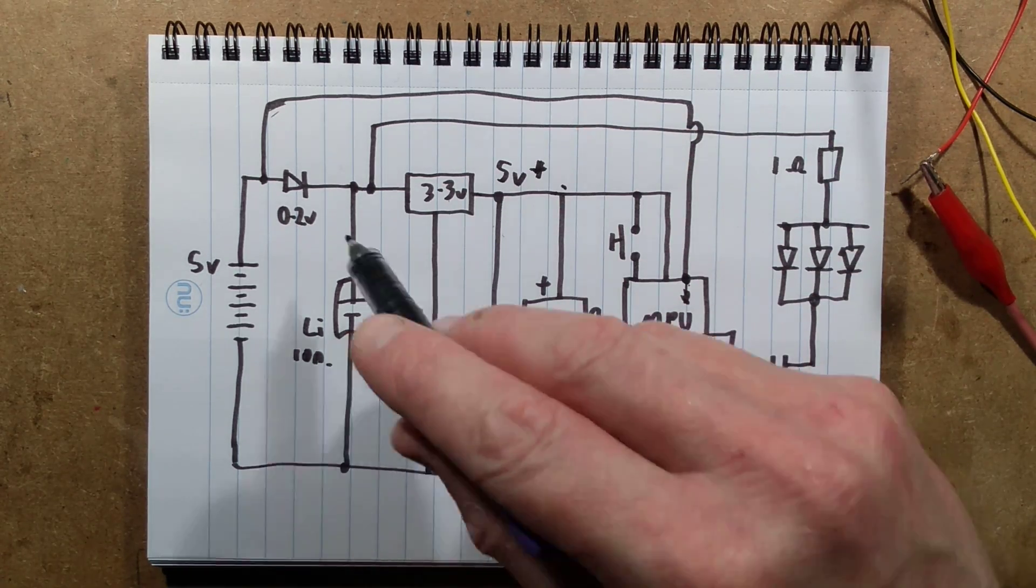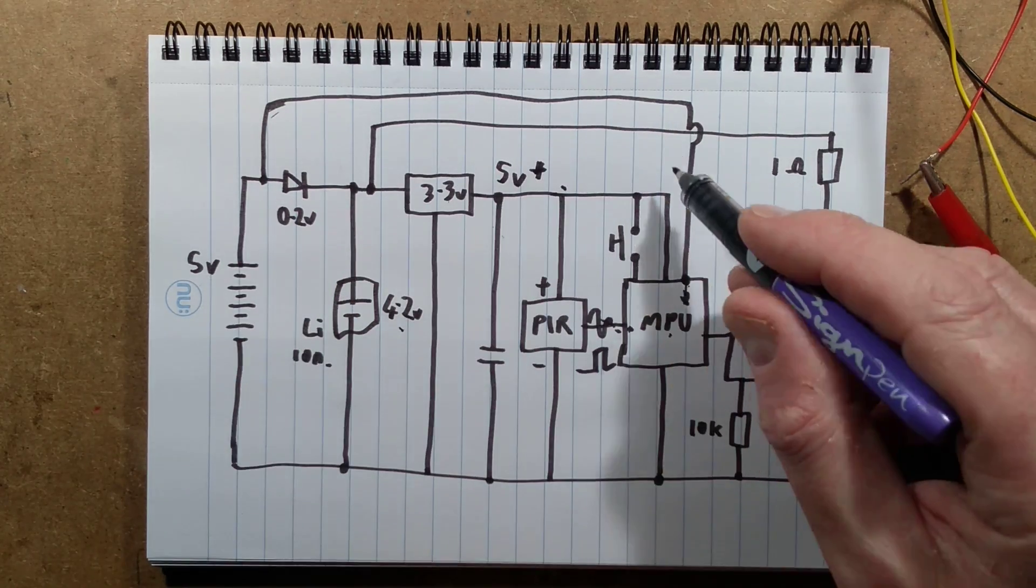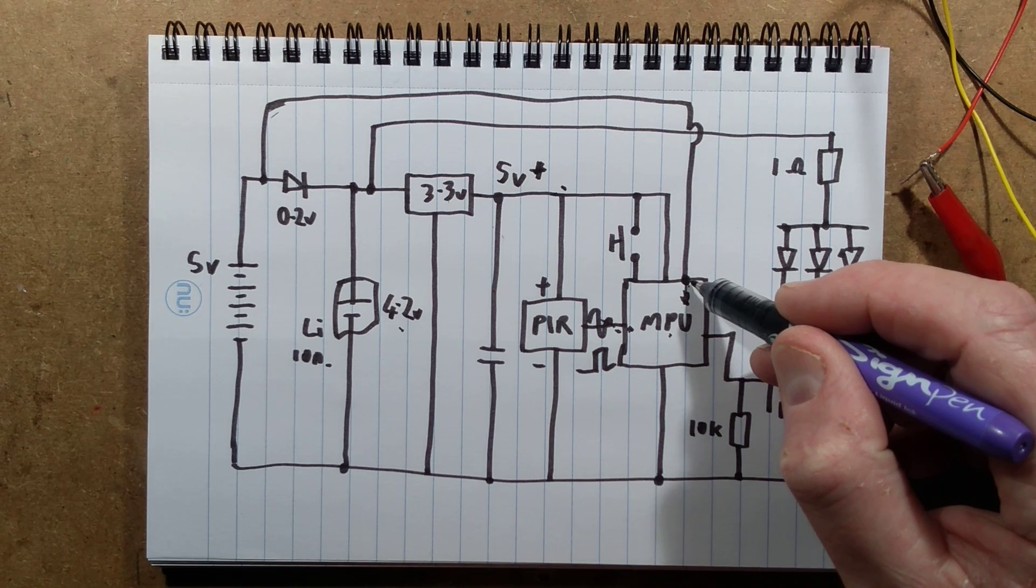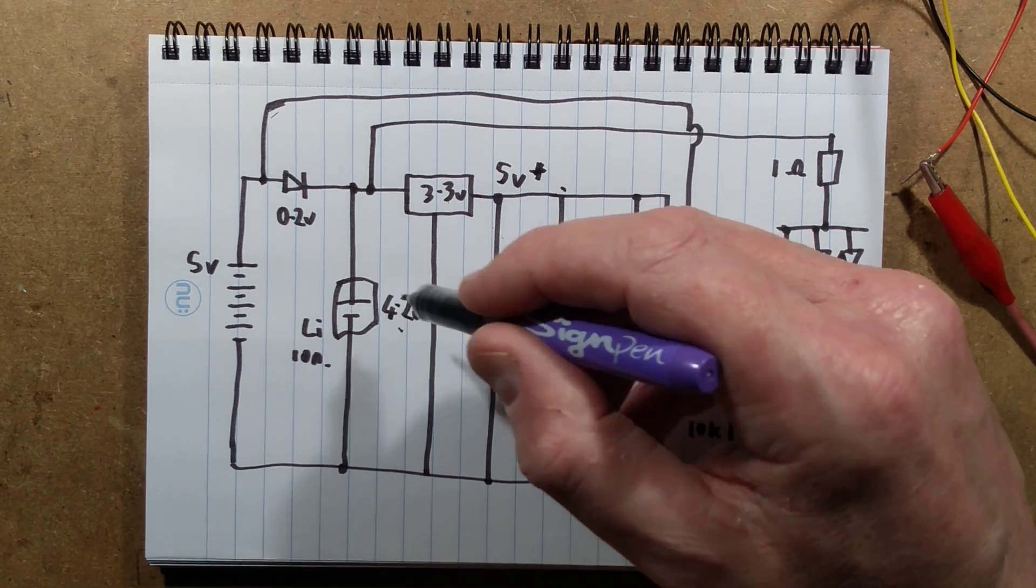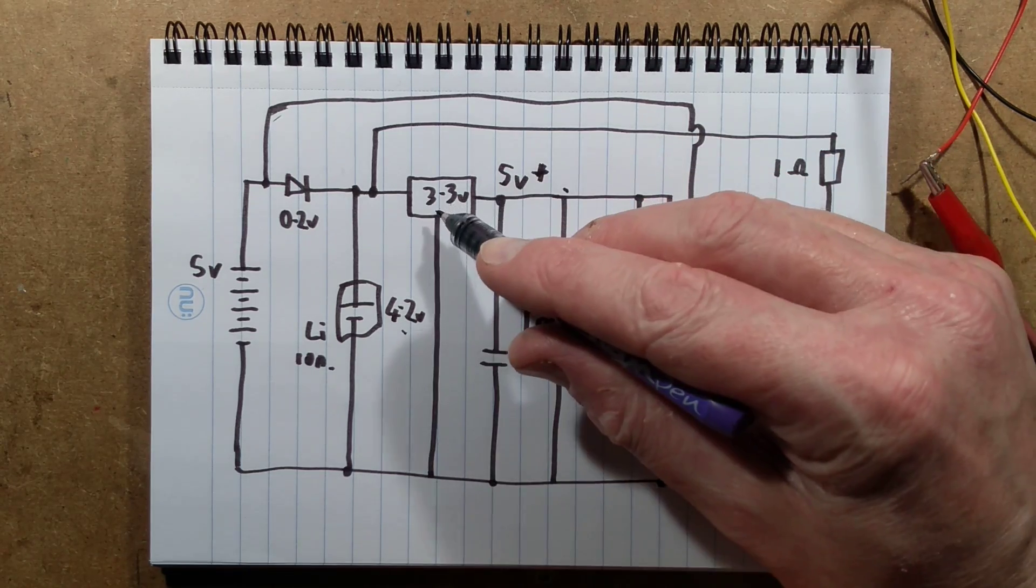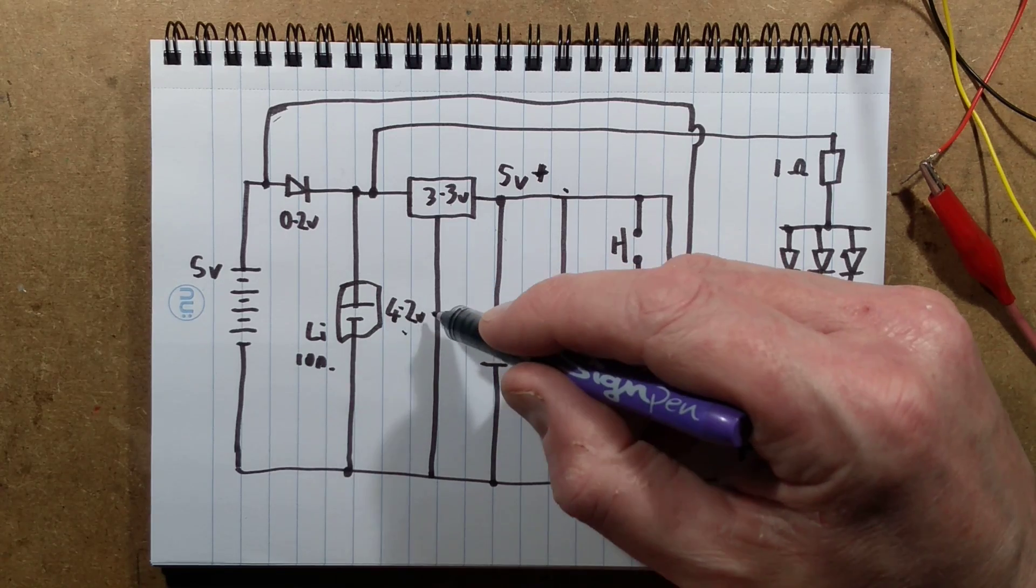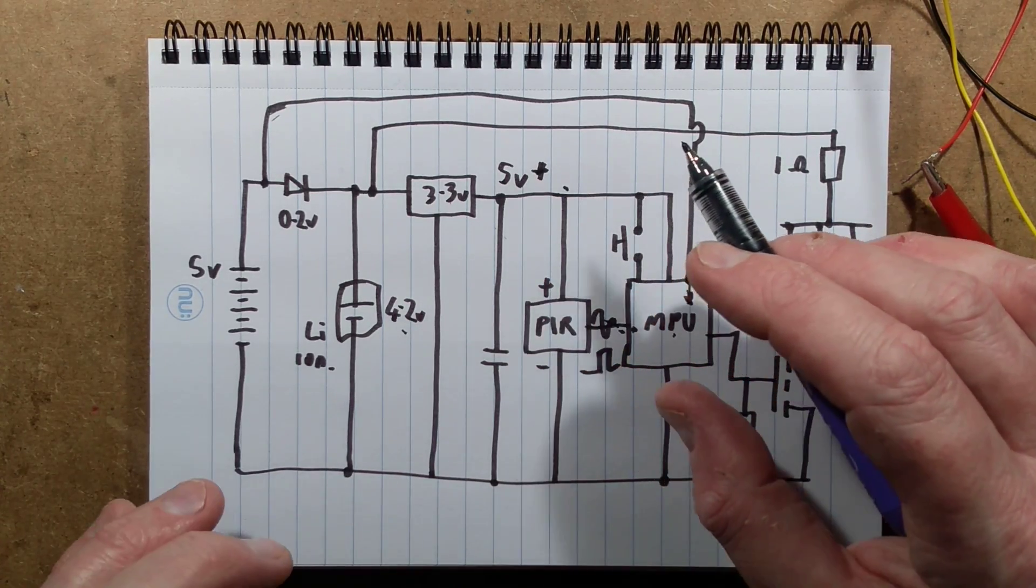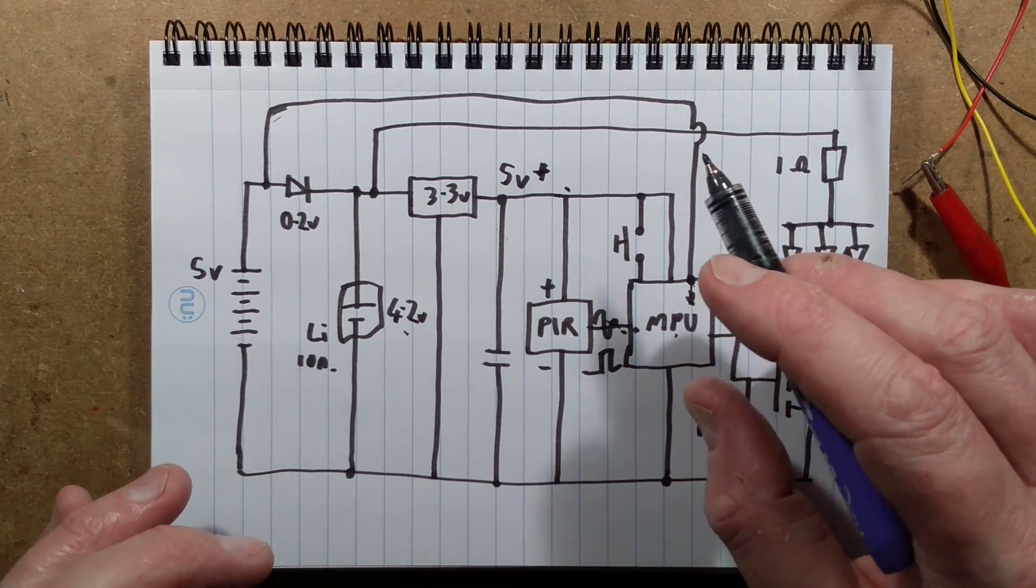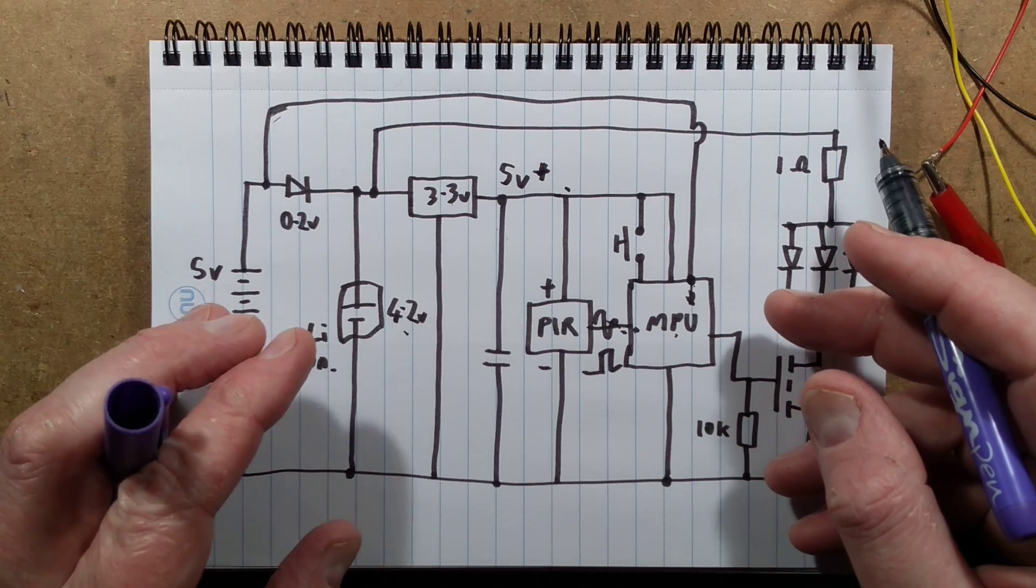It turns out that if you remove the lithium cell just to actually see what happens and you hold it up to the light, the voltage from the solar panel goes through the diode, goes to the 3.3 volt rail, and the 3.3 volt rail goes up to in the region of 5 volts plus. The only thing clamping it down is this lithium cell.